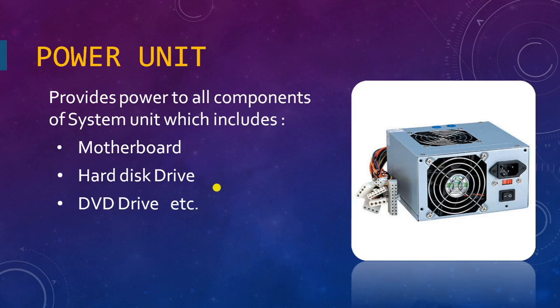The power unit is also very important. It converts alternating current (AC) to low direct current (DC) and supplies power to all components of the system unit — including the motherboard, hard disk drive, and DVD drive. The main power connects here, gets converted, and is then distributed to the motherboard, hard disk drive, and DVD drive.